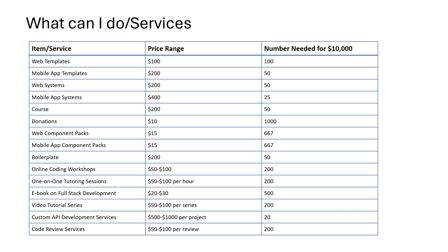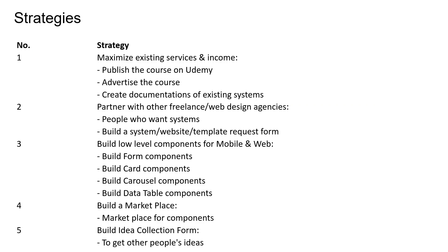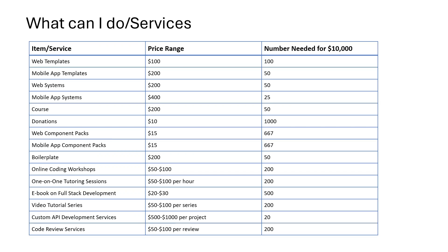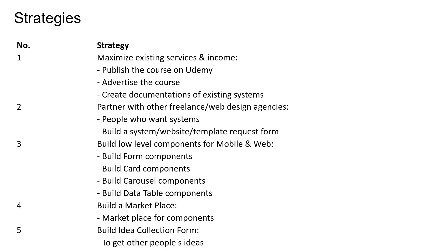I'm going to start with the easy ones. Whatever you want money for, first write down all the services or products you can sell — as many as you can — and then start implementing with the easy ones or the ones you can get started with quickly. I'm also going to look at the strategies I wrote down that can most easily and quickly generate income right away.